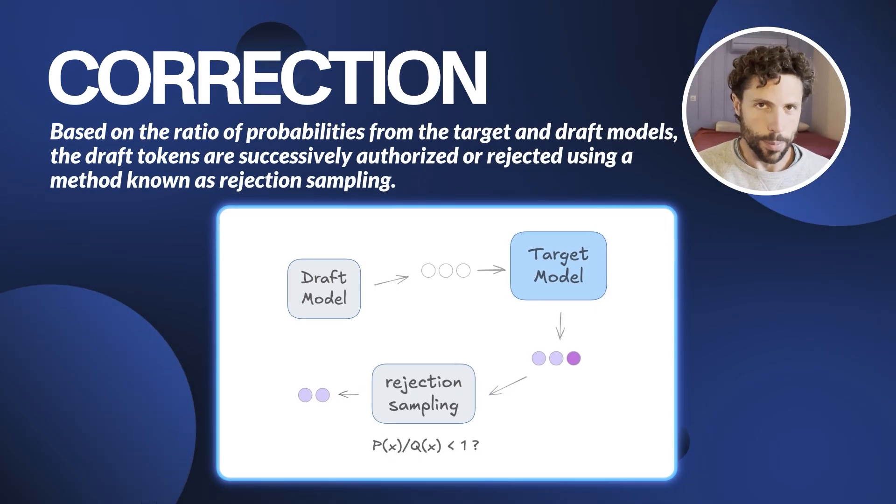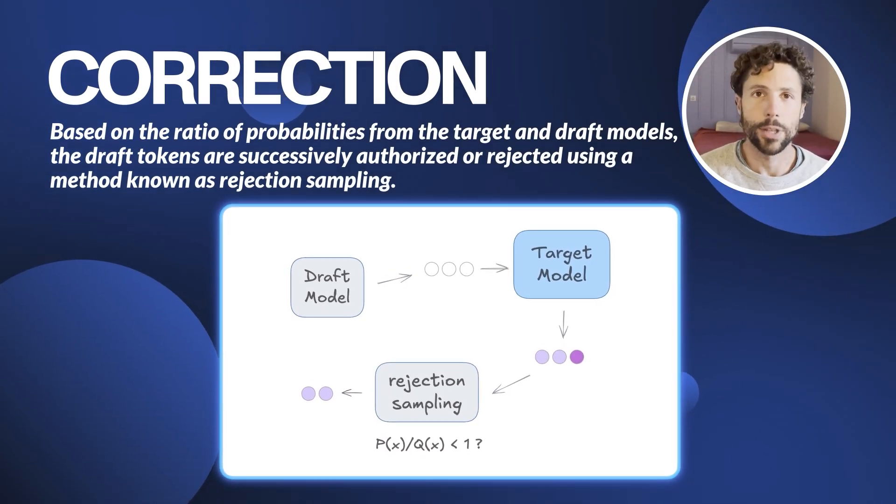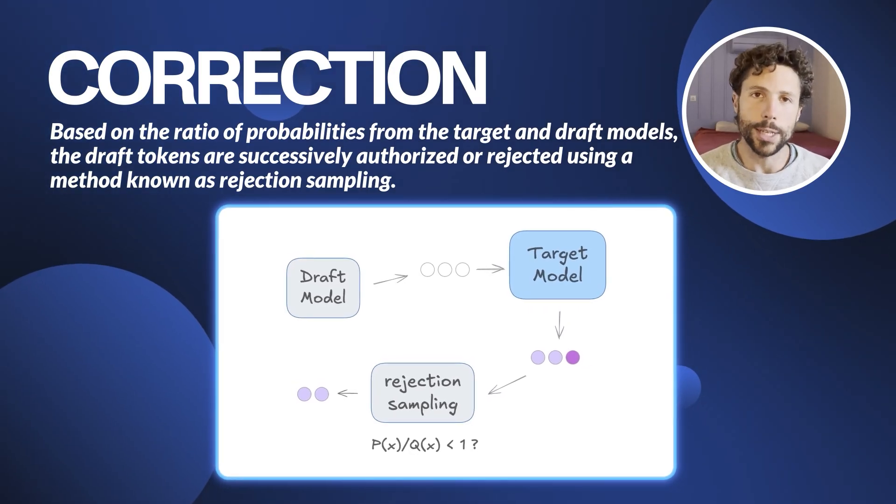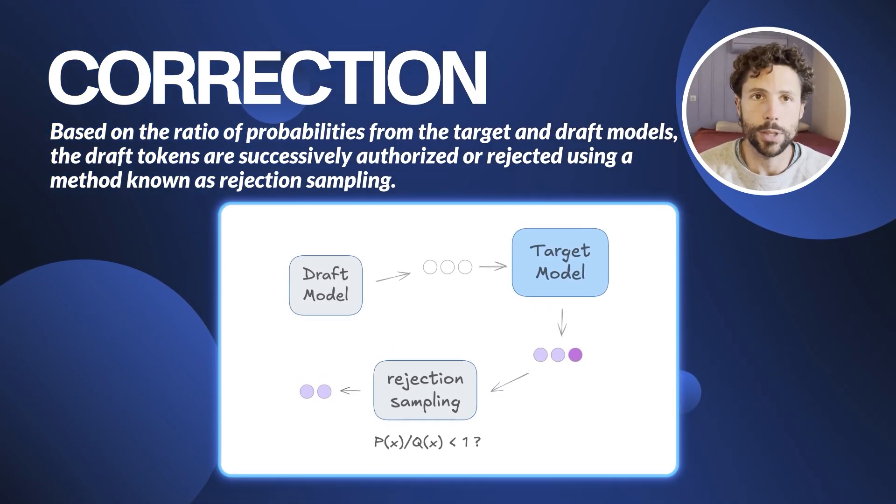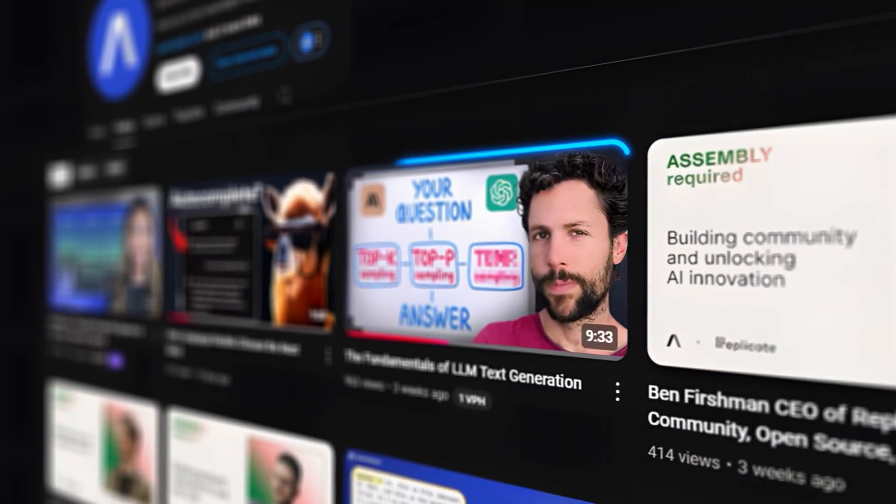That sounds great for inference speed, but what about the quality of outputs compared to the baseline, the target model? Back to the correction step — the target model will approve tokens only if its own predictions match with the draft model, and will reject the generated tokens otherwise. Intuitively, this ensures that the final generated sequence aligns with the distribution of the target model, even though we are not sampling from this distribution directly. Note also that this technique works in combination with any other decoding strategy, since we are free to choose the one used by the draft model — for example, temperature sampling or typical sampling, the decoding strategy based on information theory that we discussed in a previous video.